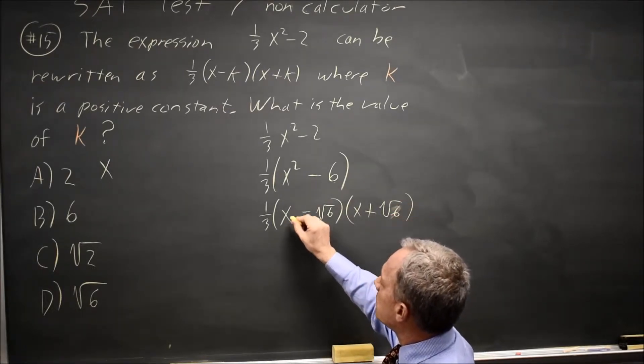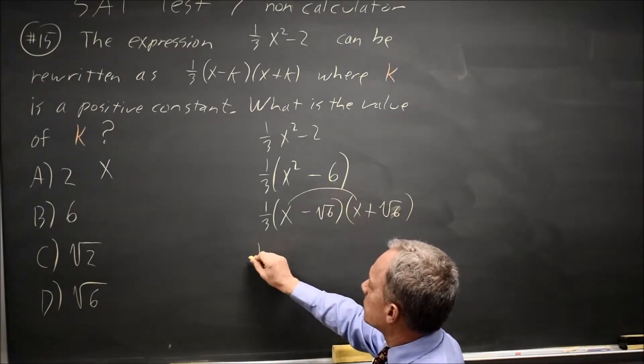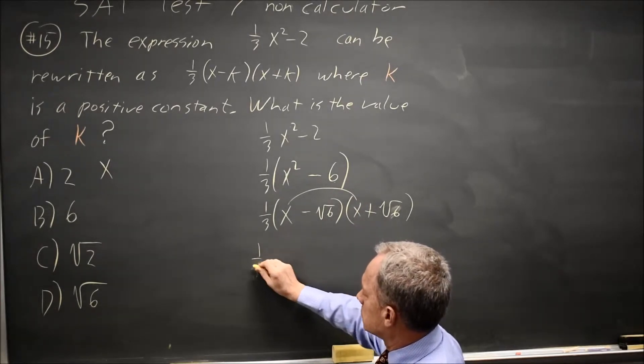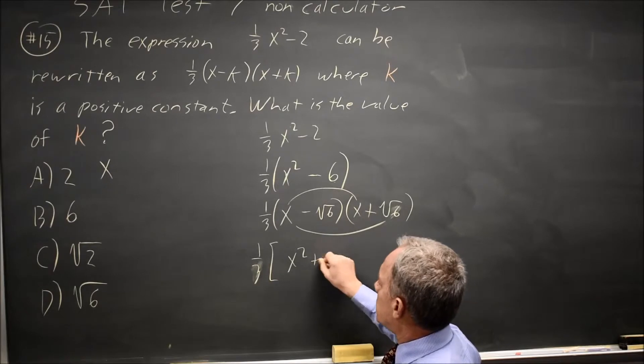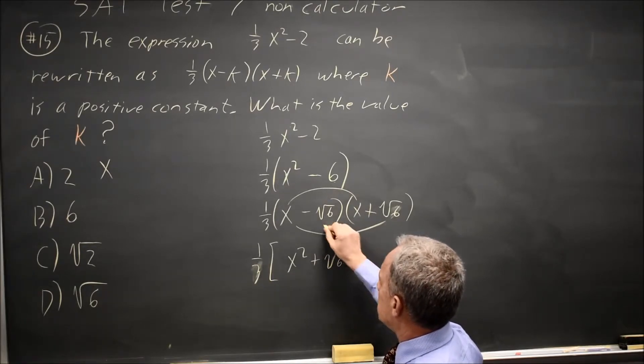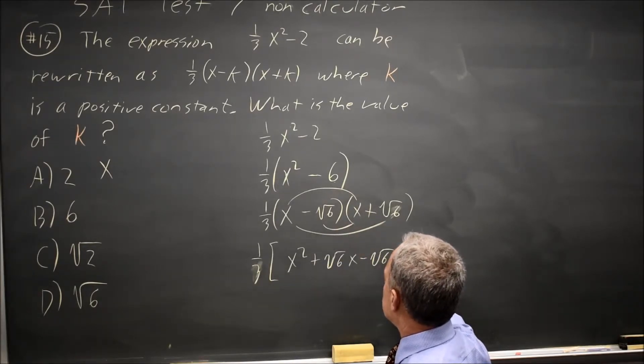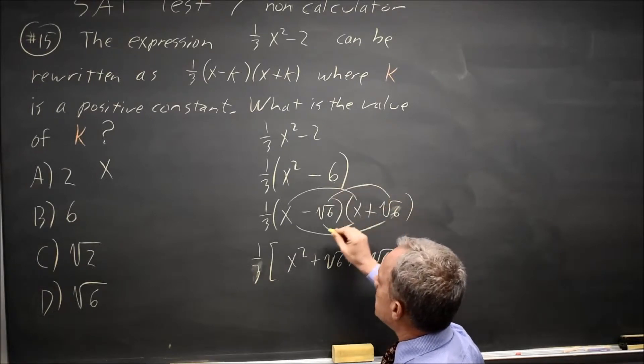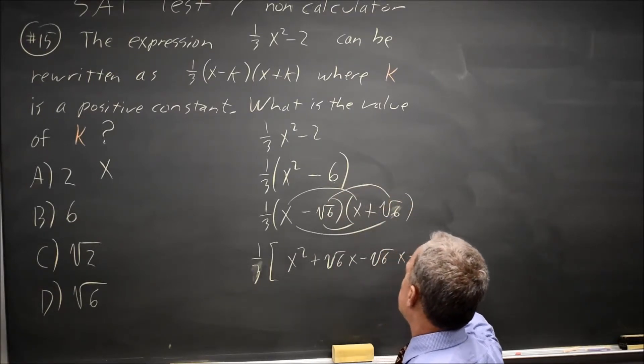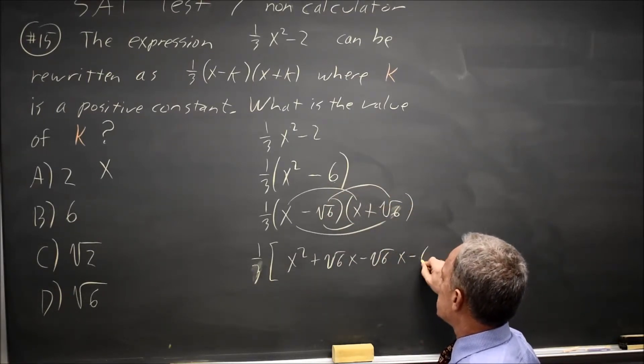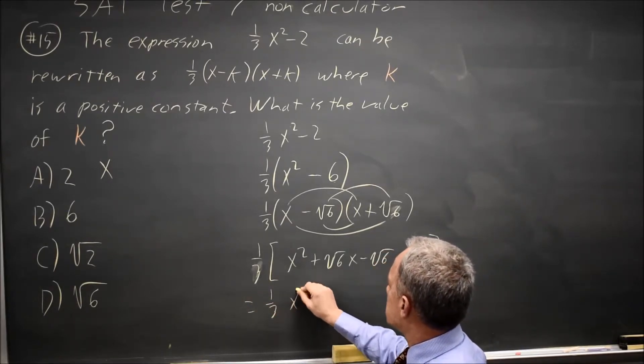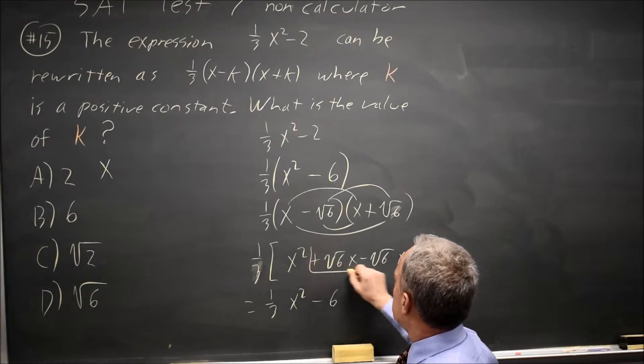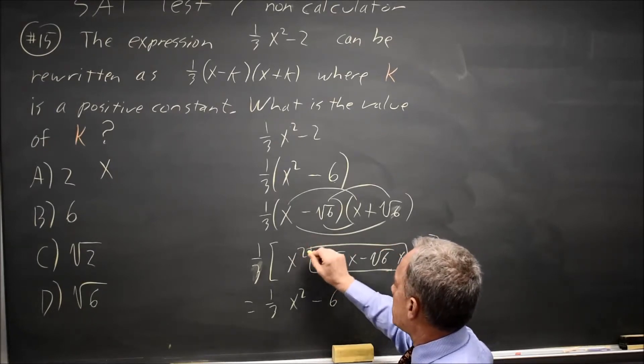And if I try FOIL, first times first is x². The outsides are positive √6 x. The insides are negative √6 x. And last times last is negative times positive is negative; √6 times √6 is 6. That simplifies to 1/3(x² - 6) because these two terms add to 0.